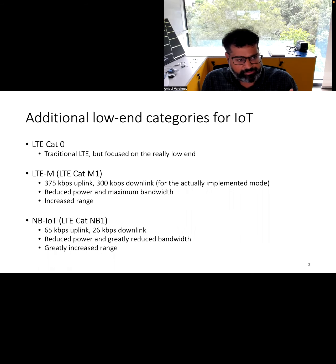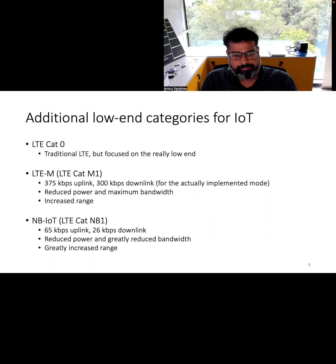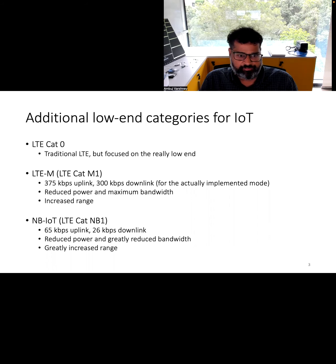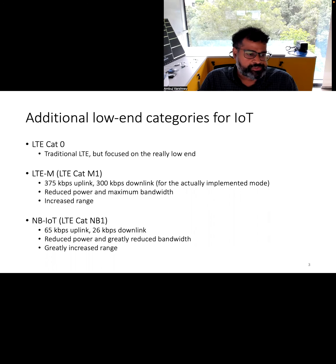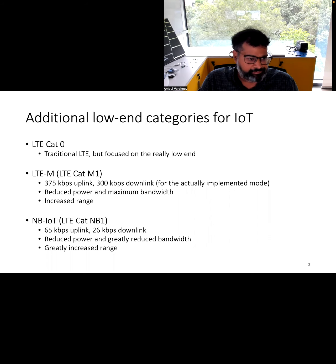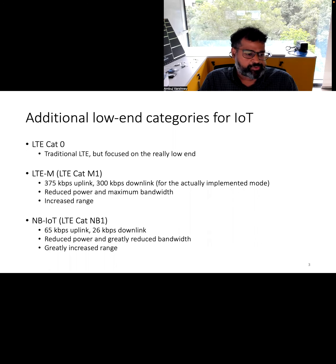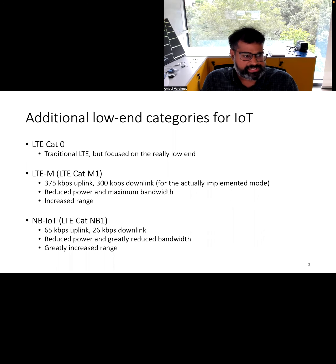Then we have LTE Cat-M1, which supports uplink of 335 kbps and 300 kbps downlink. This is an example of a wireless standard with asymmetric capability, because typically for IoT devices the connectivity pattern is from the device to the edge device or the cellular base station. LTE supports reduced transmit power and reduced bandwidth to cater to IoT device constraints. Then we have Narrowband IoT, also called LTE Cat-NB1, which supports 65 kbps uplink and 26 kbps downlink, with even lower bandwidth usage and greatly increased range.